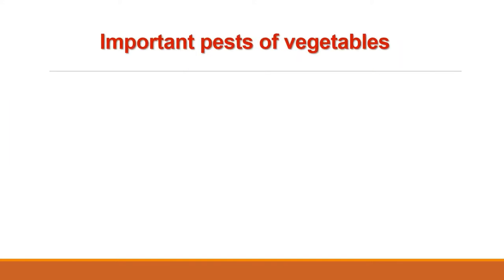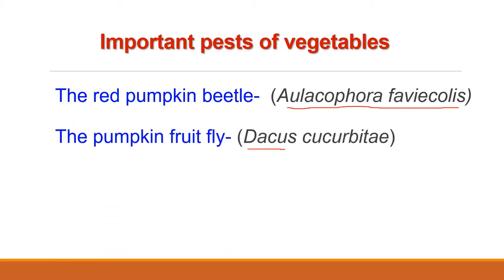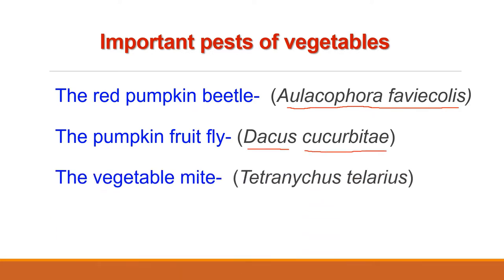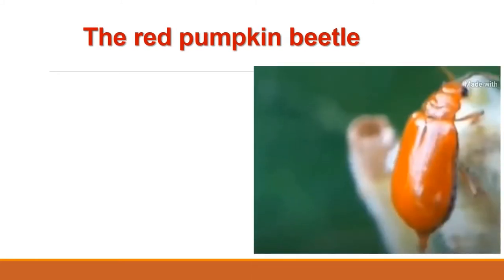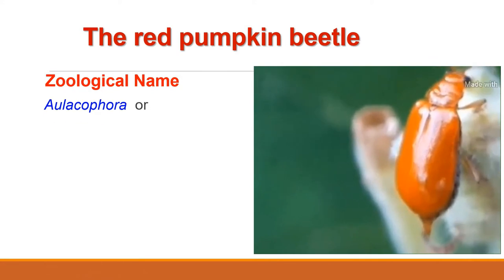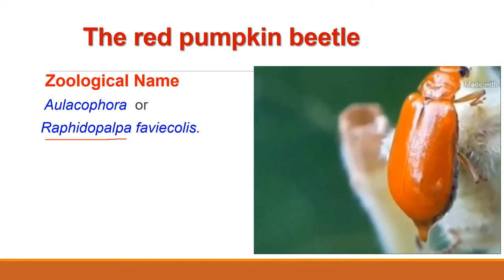The zoological name of the red pumpkin beetle is Aulacophora foveicollis, also known as Raphidopalpa foveicollis. The pumpkin fruit fly is known as Dacus cucurbitae. The vegetable mite is known as Tetranychus telarius and the zoological name of Hadda beetle is Epilachna vigintioctopunctata.